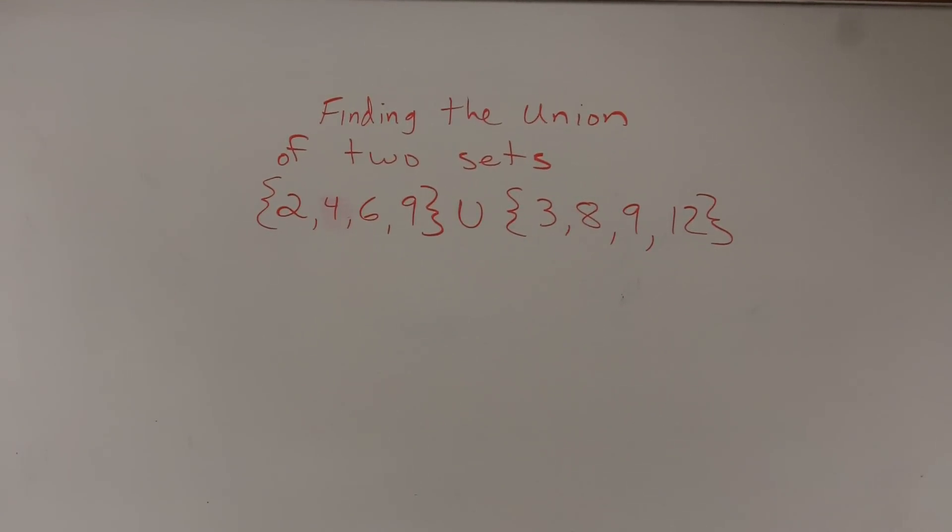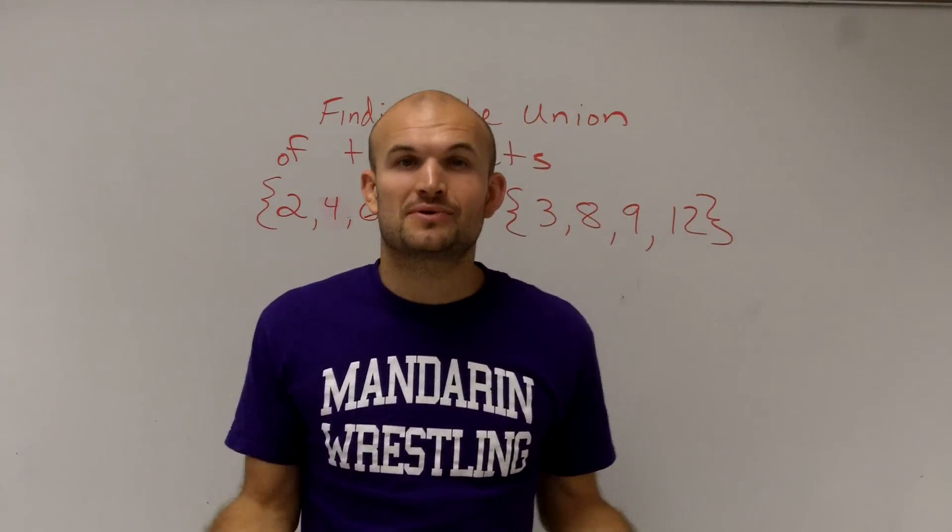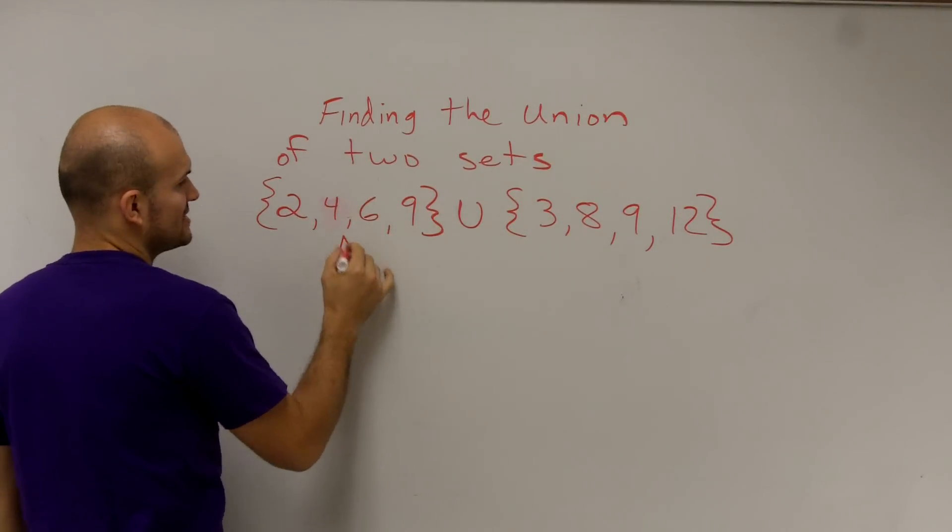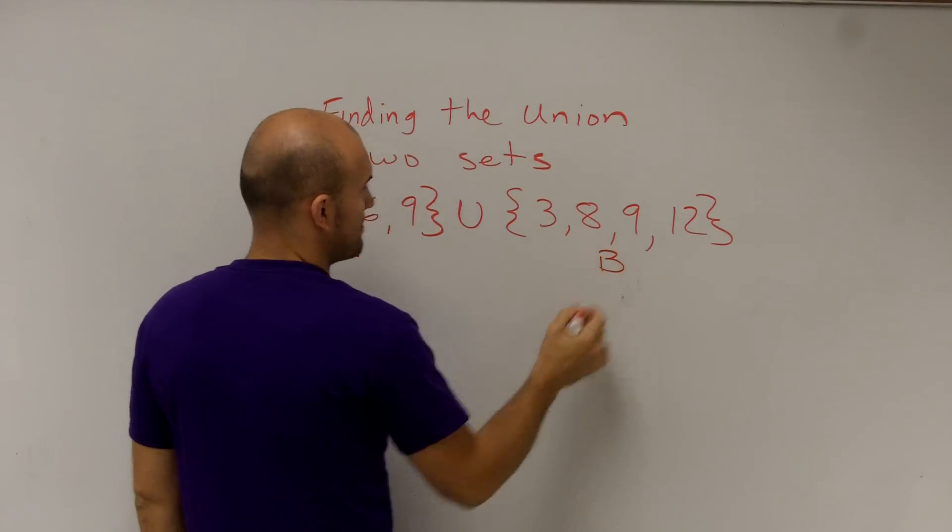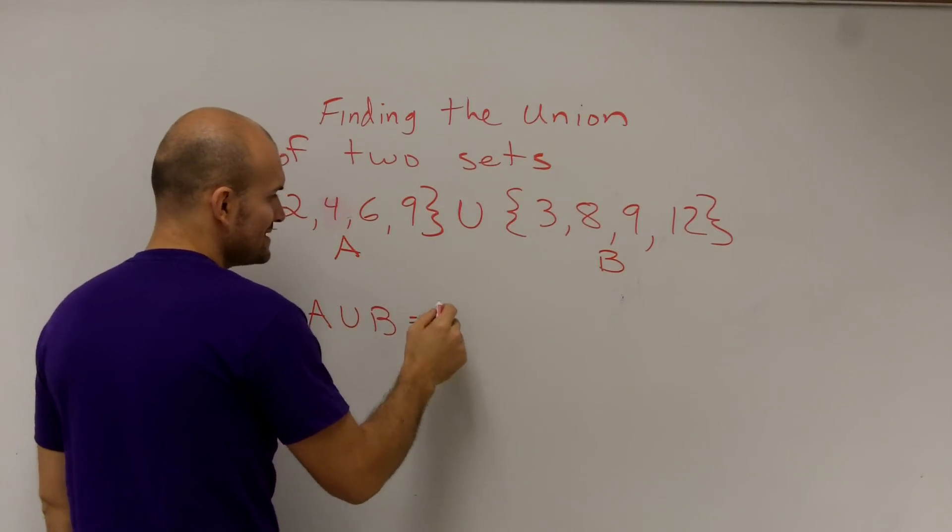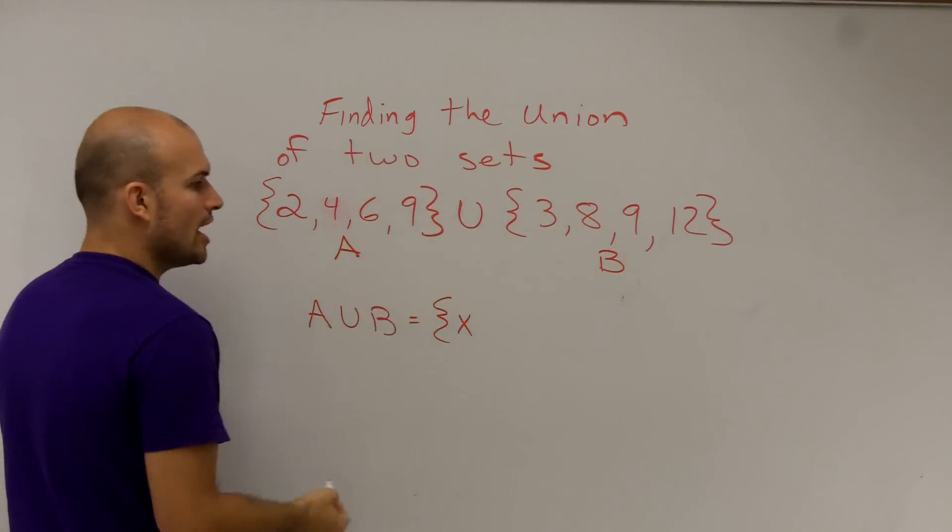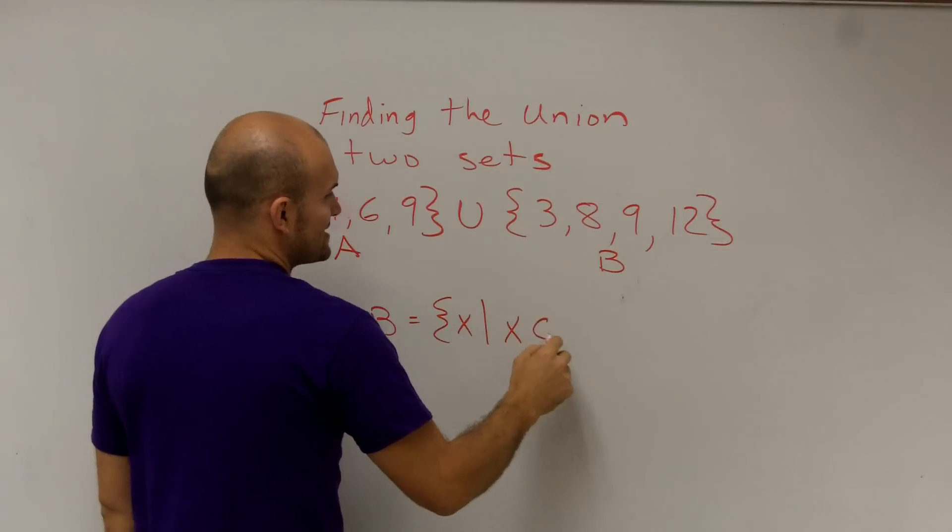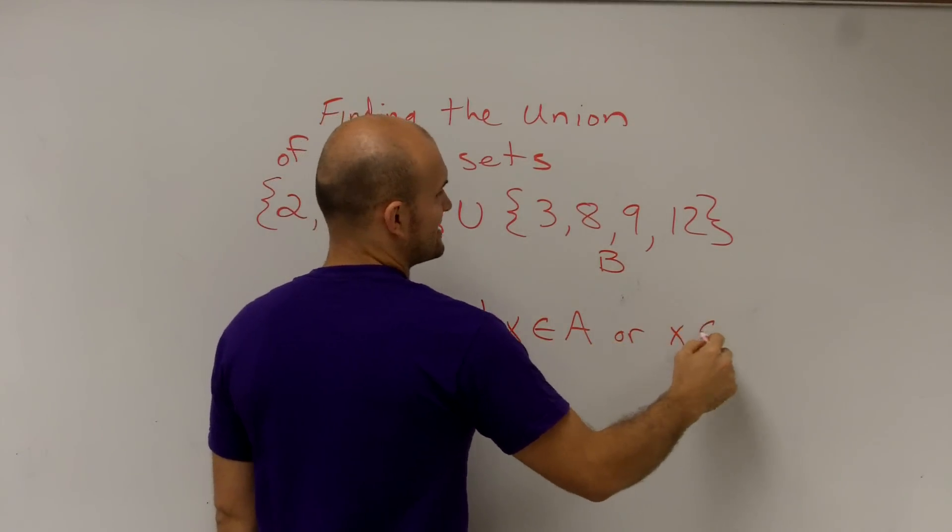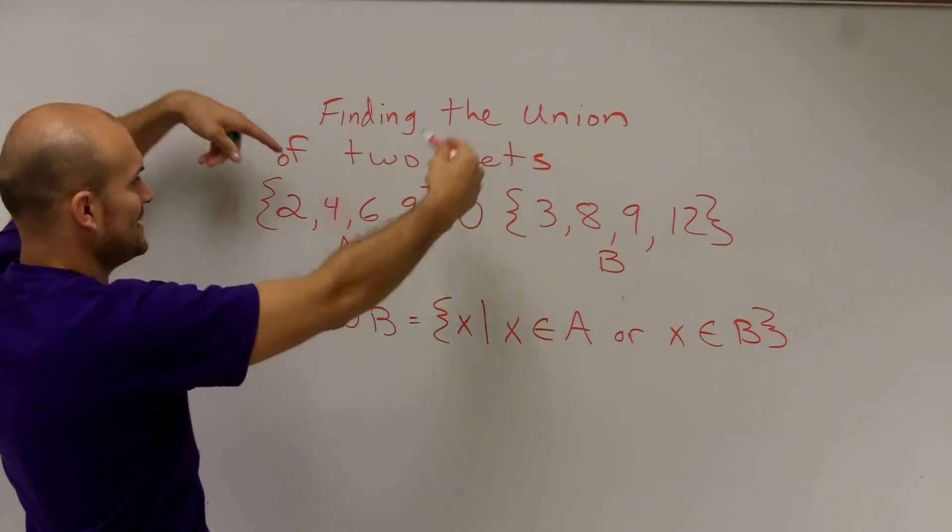To find the union of two sets - union means to combine and bring together. Let's call this set A and this set B. A union B means all elements X, where X represents the members or elements, such that X is contained in A or X is contained in B. Remember, 'or' is inclusive - that means it can be in A, in B, or in both of them.